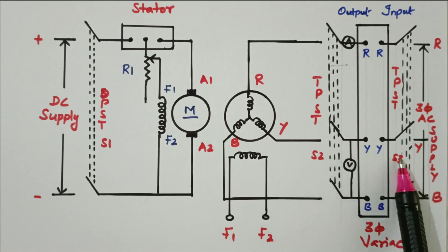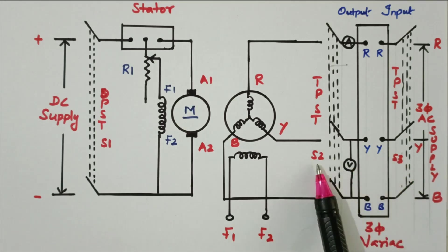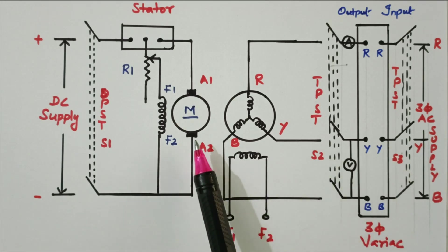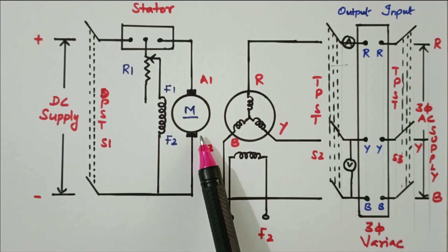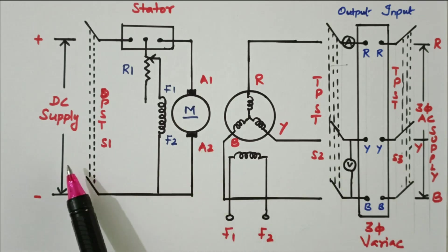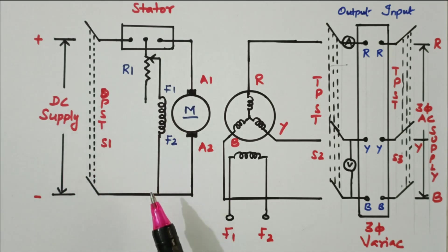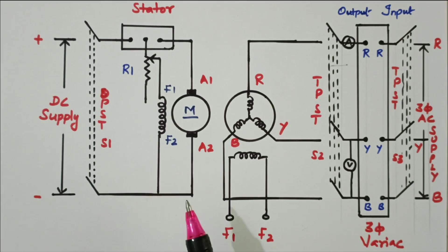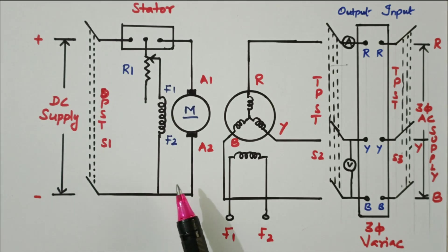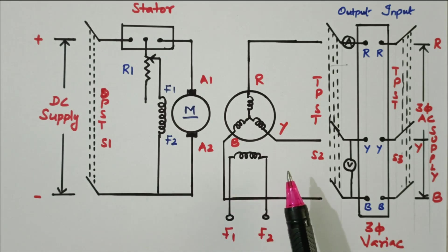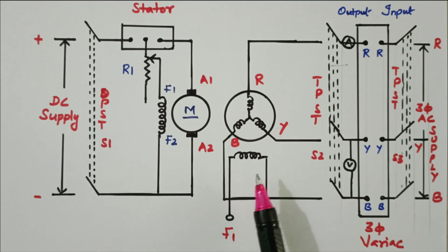Both sides have TPSD switches named S2 and S3. The alternator is coupled with the DC motor which is connected through a DC supply, started by the three-phase starter. Using this test we are able to find the Xd and Xq parameters.